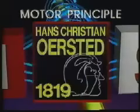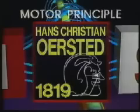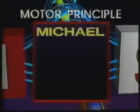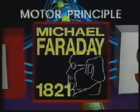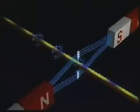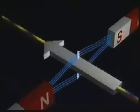The motor principle is one of the most important applications of Hans Christian Orsted's discovery of electromagnetism. But it was British physicist Michael Faraday who, in 1821, put all the pieces together and devised the first electromagnetic motor. The motor principle states that if a current carrying conductor is placed within an external magnetic field, it will experience a force which is perpendicular to both the direction of the electron flow and the external magnetic field.